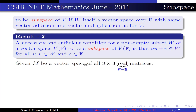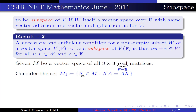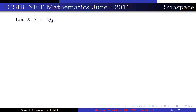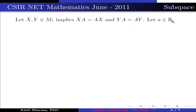Now, given M is the vector space of all 3×3 real matrices, this implies the field is the set of real numbers. Consider the set M1 containing x belonging to M such that xA = Ax. This implies M1 is a subset of M. Since the 3×3 real identity matrix belongs to M1, this implies M1 is not equal to the empty set. Let x, y belong to M1. This implies xA = Ax and yA = Ay. Let α belong to R.